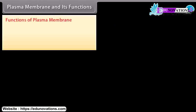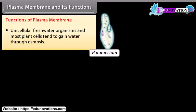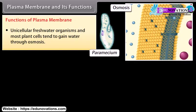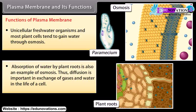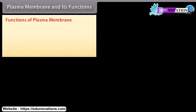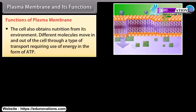Unicellular freshwater organisms and most plant cells tend to gain water through osmosis. Absorption of water by plant roots is also an example of osmosis. Diffusion is important in exchange of gases and water in the life of a cell. The cell also obtains nutrition from its environment; different molecules move in and out of the cell through a type of transport requiring energy in the form of ATP.